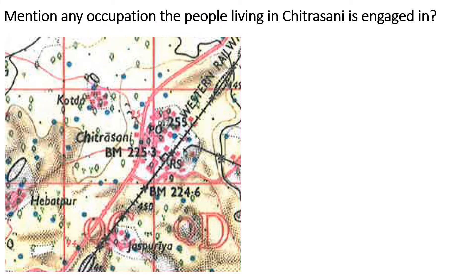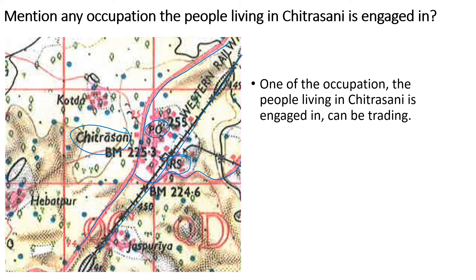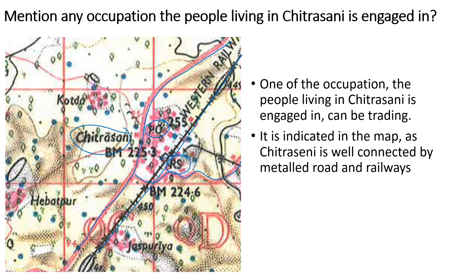Mention any occupation the people living in Chitraseni are engaged in. Chitraseni is here — we can see it is very well connected. There is a metal road here, another metal road going from this side, and a railway line is also here. There is even a railway station and a post office. So you can write that one occupation the people of Chitraseni are engaged in is trading. It is indicated on the map as Chitraseni is well connected by metal road and railways.